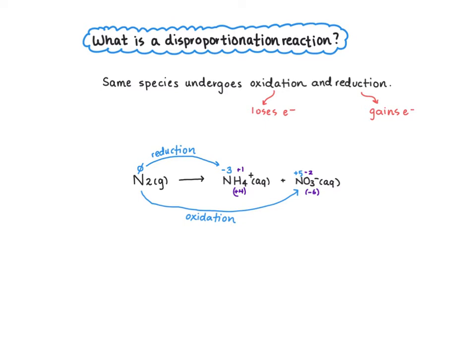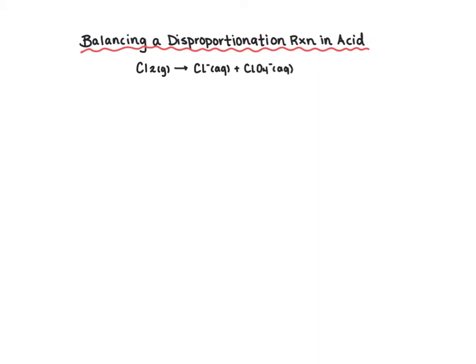One telltale sign of a disproportionation reaction is you'll have an element in one spot in the reactants and in two different compounds in the products. It's not always disproportionation because oxygen and hydrogen are often in that situation, but always check if you see an element once in the reactants and twice in the products. We are going to start by balancing a disproportionation reaction in acid using the half-reaction method, where one chemical species in the reactants splits into two different species in the products.